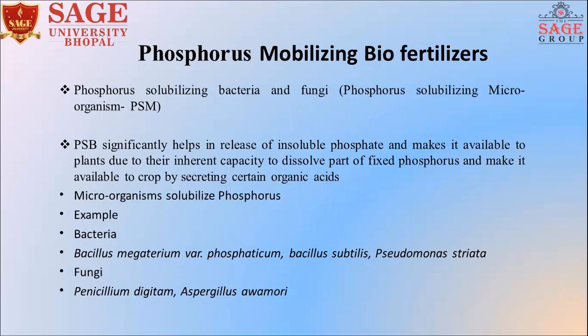Now, phosphorus mobilizing bacteria — why do we need them? In soil conditions, when you apply 100 kg of phosphorus into the soil, only 10 to 20 kg is consumed by the plant. This means phosphorus use efficiency is only 10 to 20%. The remaining phosphorus becomes fixed in the soil. So we use and utilize phosphorus mobilizing bacteria.